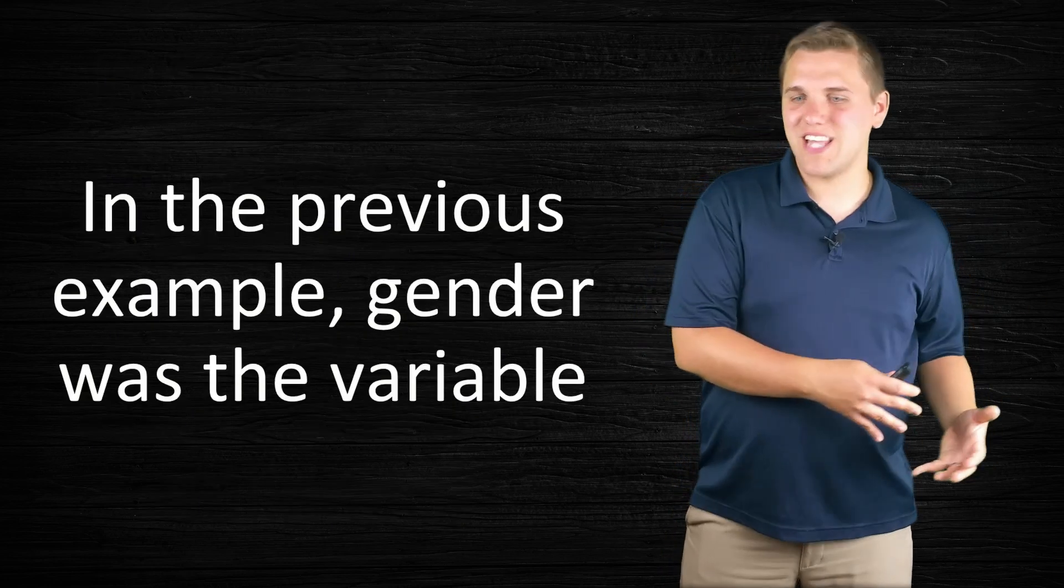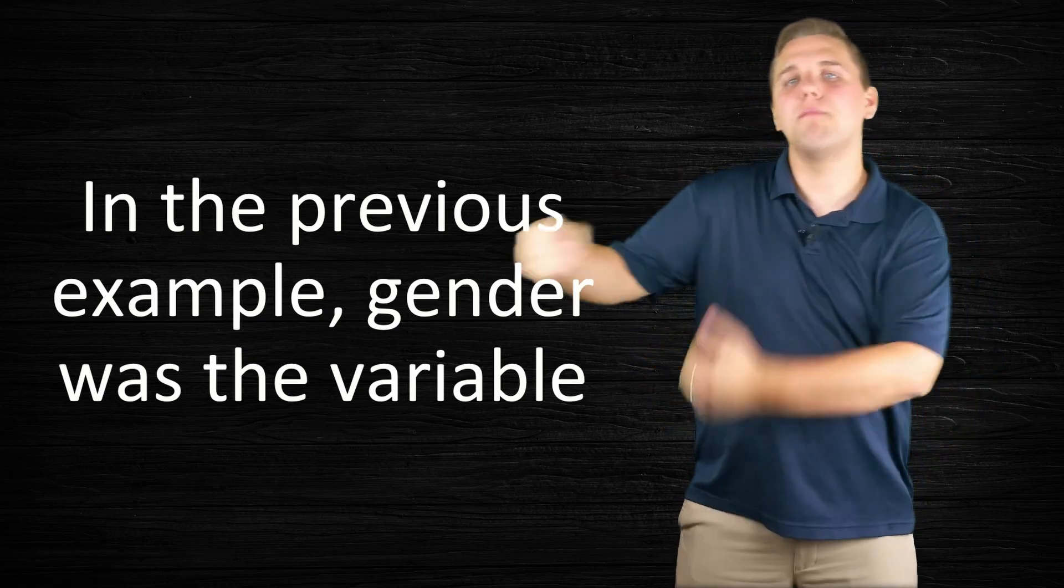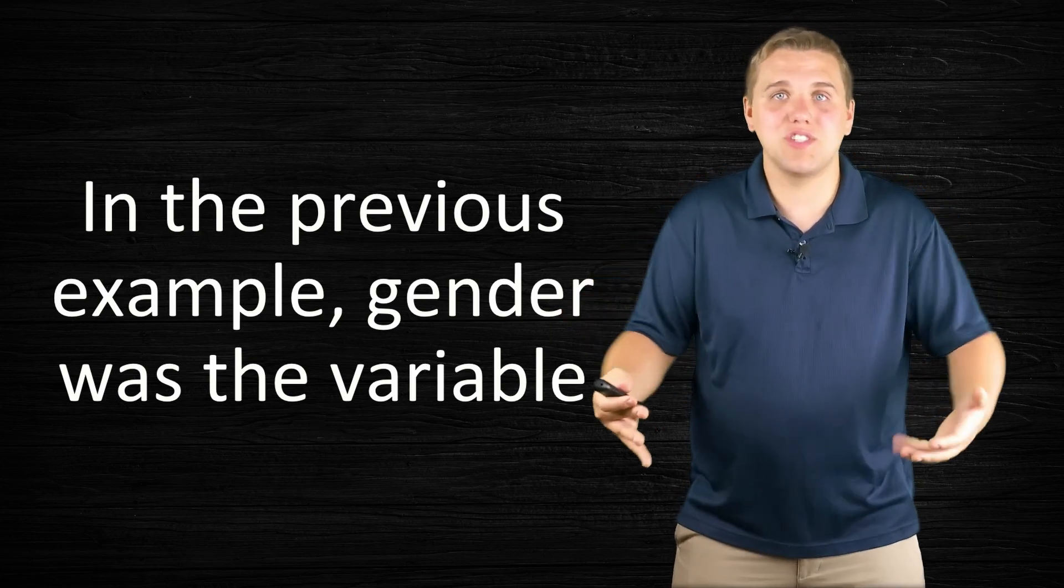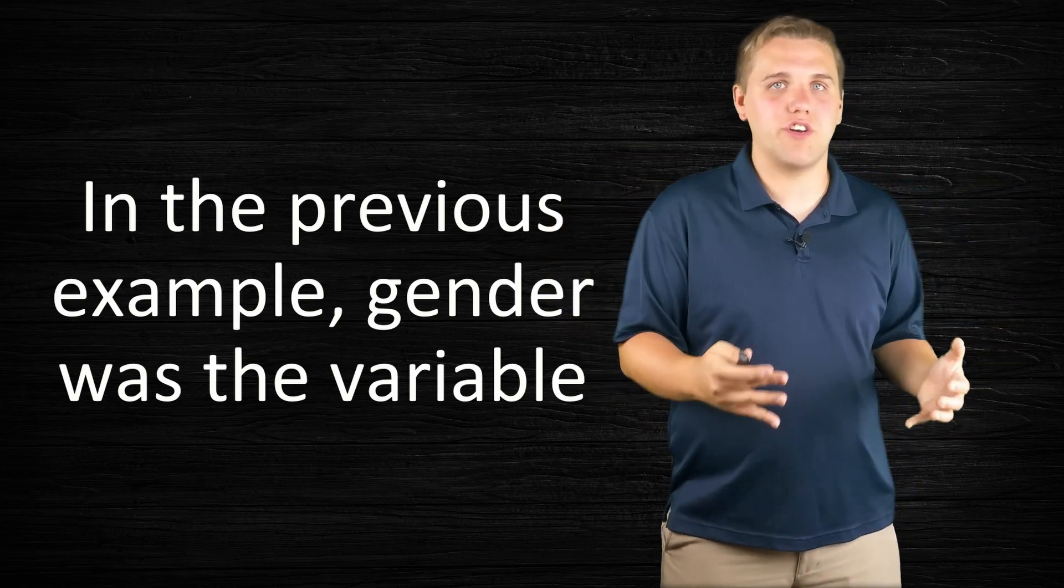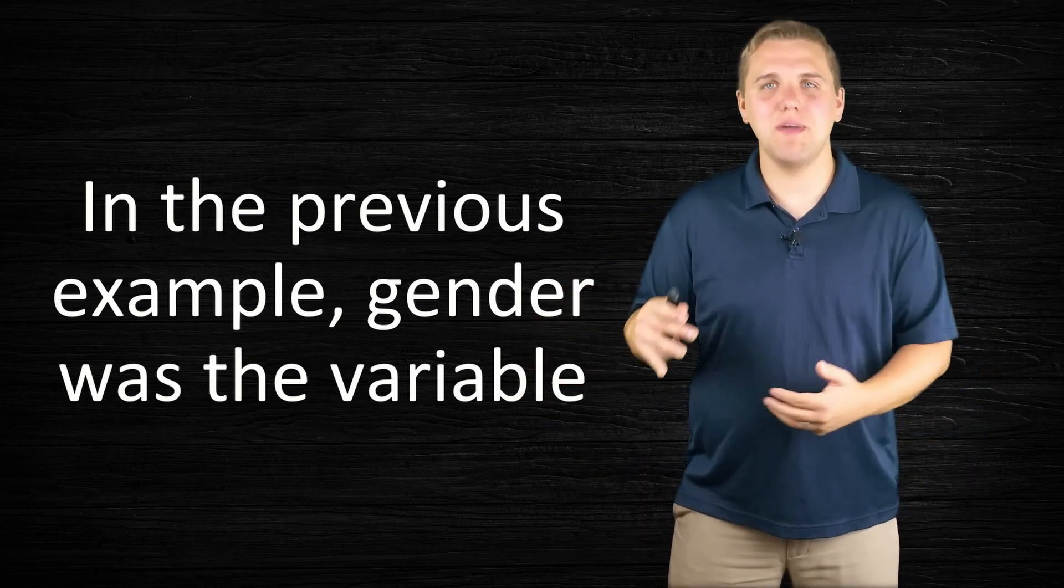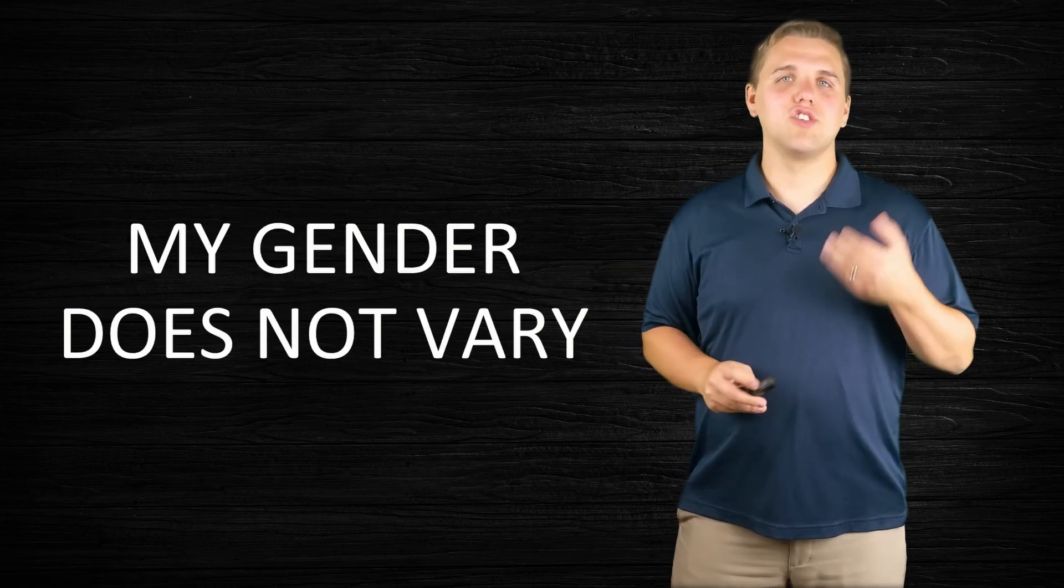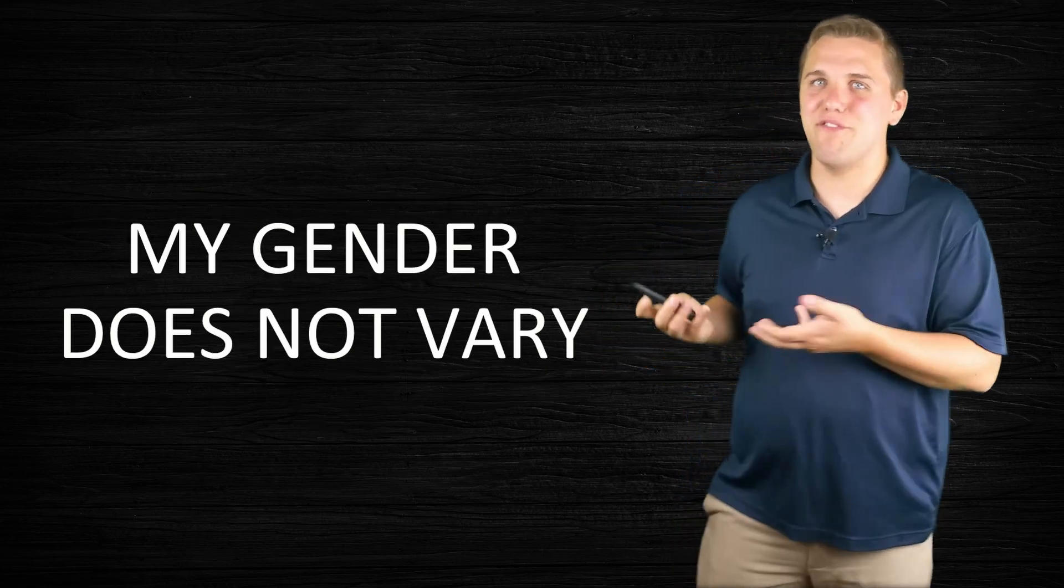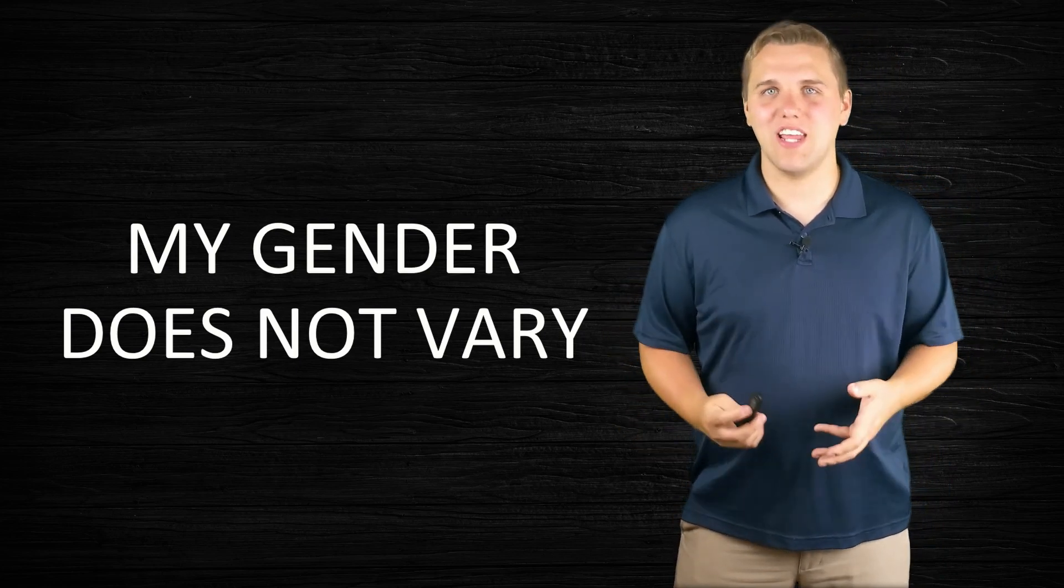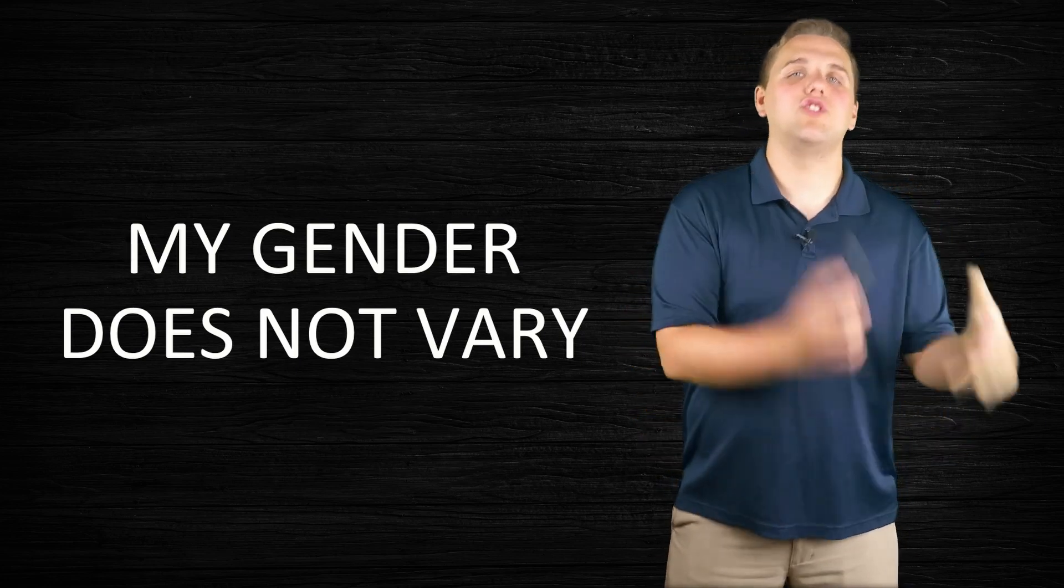Let me go through an example to explain this in more detail. In my previous example, gender was the variable. Gender is something that varies amongst my household, meaning that my household is not just completely one gender. The gender varies amongst the members of this household, meaning that the observations are going to be different. So it's important to understand that my gender does not vary. I'm a male. That is not ever going to change. You have to understand that gender does not vary.